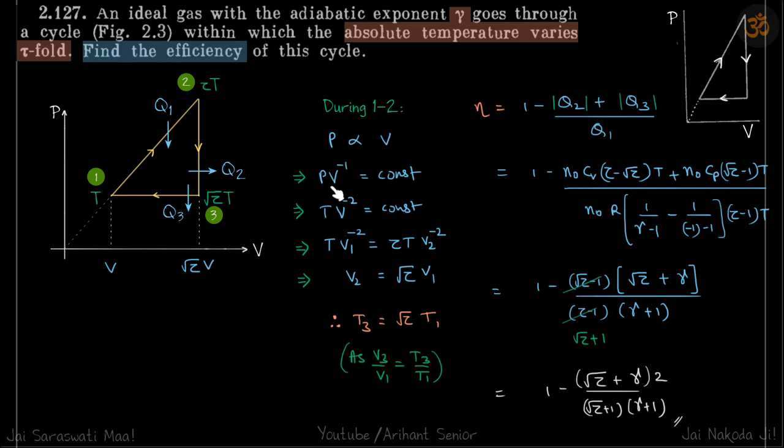This equation becomes TV^(n-γ) = constant. If we put the values of T1 and T2, we get the ratio of V2 and V1, which is √τ. So if this is V, then this is √τ times V.